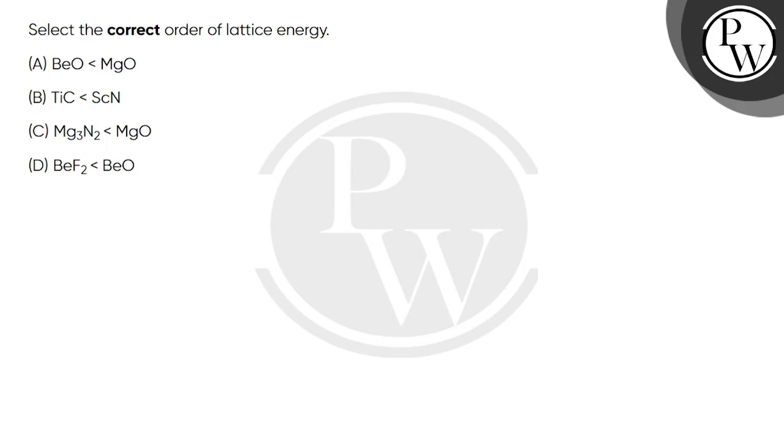Hello students, let's do this question. The question says select the correct order of lattice energy. What happens when you have one mole of cation, let's say M^+(g), and one mole of X^-(g)? When we combine them, we will make MX solid. The energy released is called lattice energy.